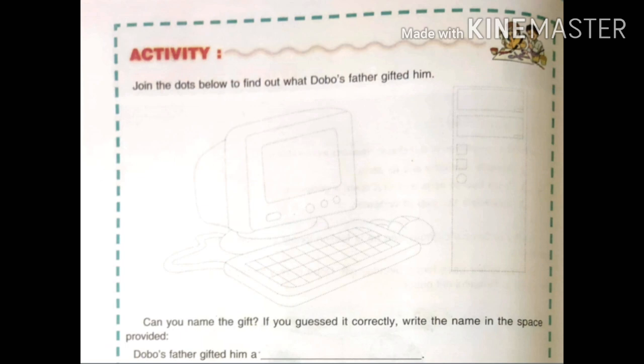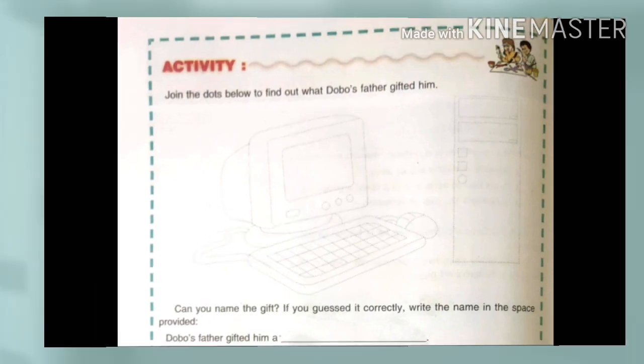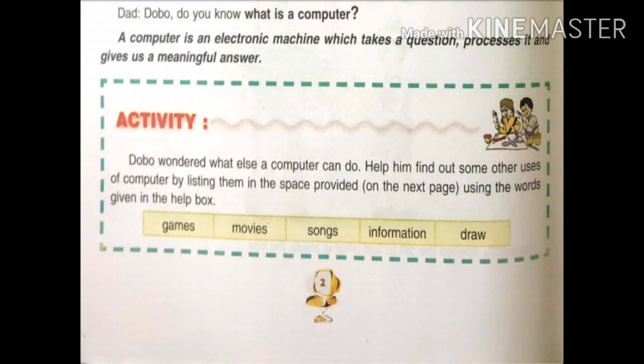Dad is asking Dobo: 'Dobo, do you know what is a computer?' A computer is an electronic machine which takes a question, processes it, and gives us a meaningful answer. Electronic means the things which run on electricity.